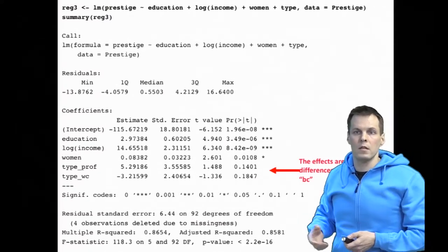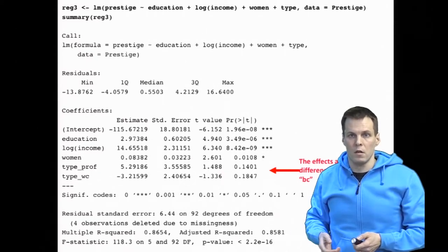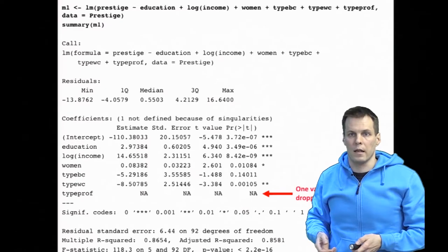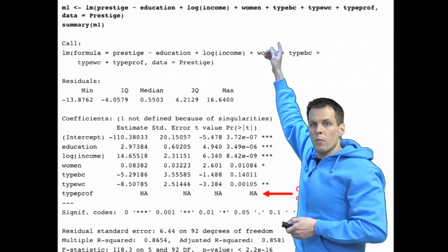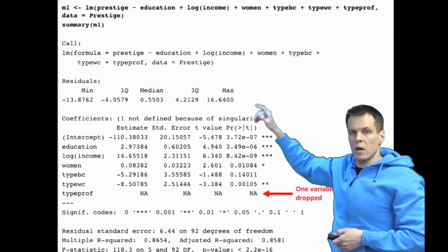I have to create the dummies manually and then specify them into the model manually. So I specified a model like that. We have type blue collar, type white collar, type professional here, and we try to estimate the model.